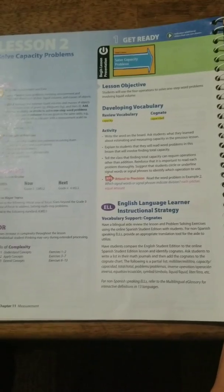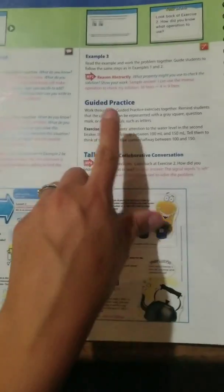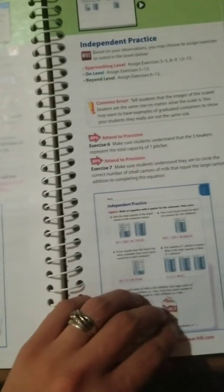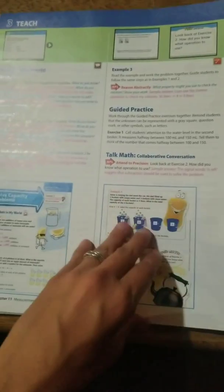This is what the teacher edition looks like. You'll have what you're going to teach, and then you'll keep going through the lesson — you'll get to guided practice, then independent practice, and then you finish up the lesson. There are about five pages for each lesson.